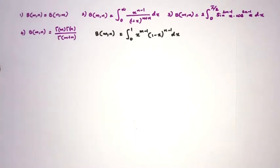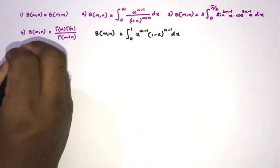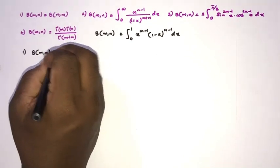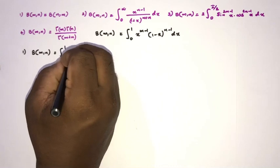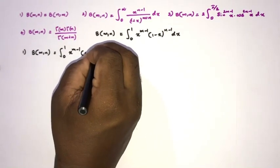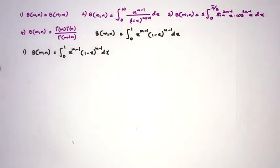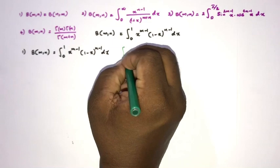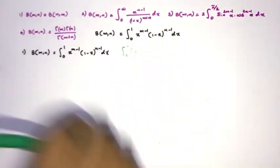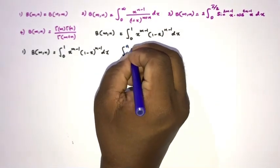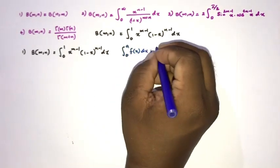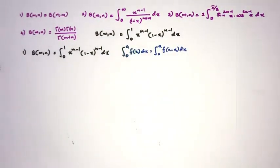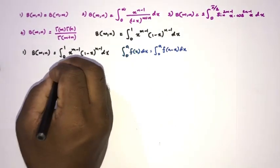In this video we are going to prove these identities. First, the symmetry property. We know the definition: B(m,n) = integral from 0 to 1 of x^(m-1) times (1-x)^(n-1) dx. We apply King's property, which states that the integral from 0 to a of f(x) dx equals the integral from 0 to a of f(a-x) dx.